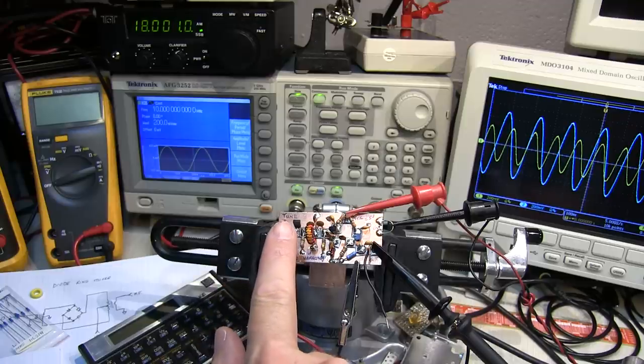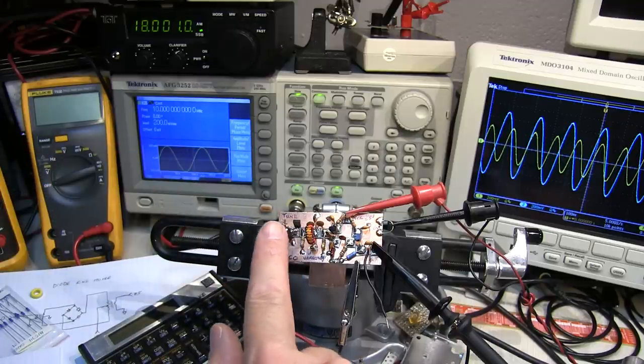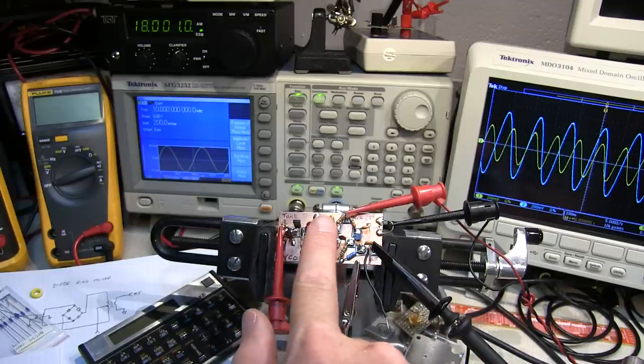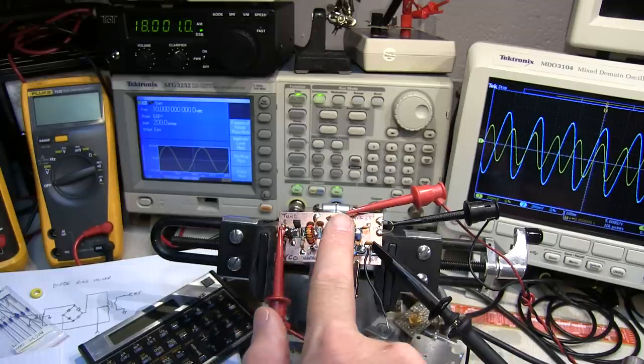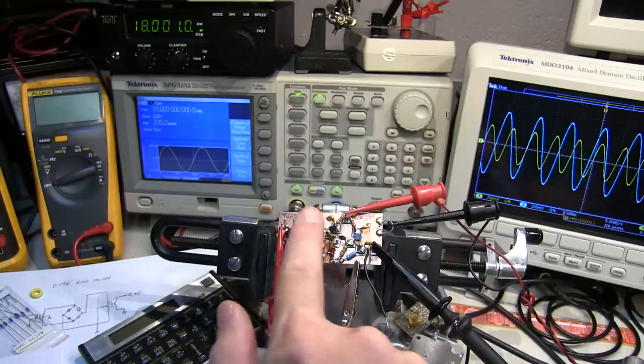Because as I bring my finger nearby, I've got some capacitance, very small, from the coil to my finger, and then from my finger to ground. So as you can see, I can very dramatically change the frequency of that oscillator just by putting my finger nearby.